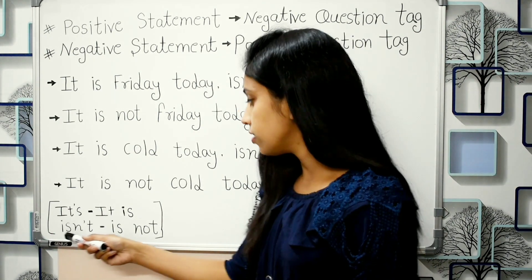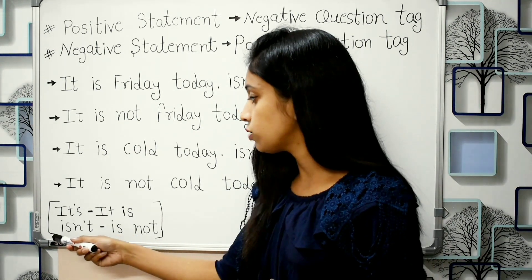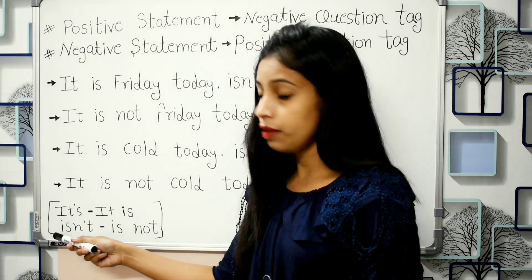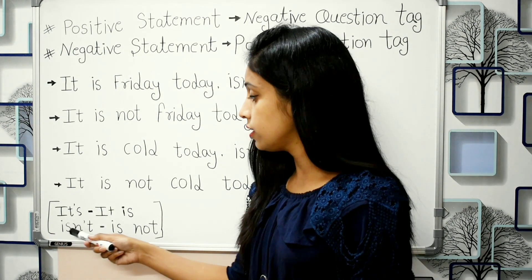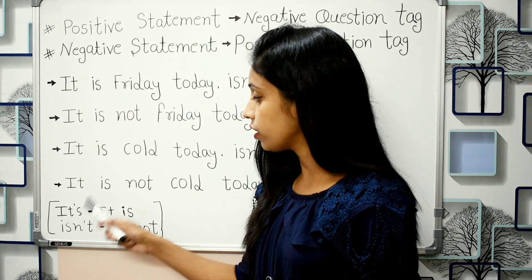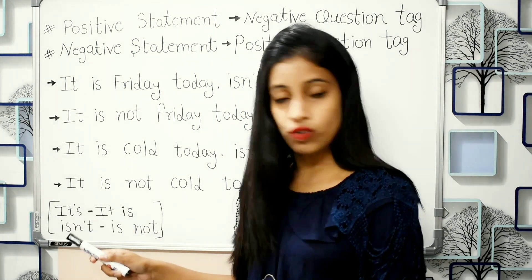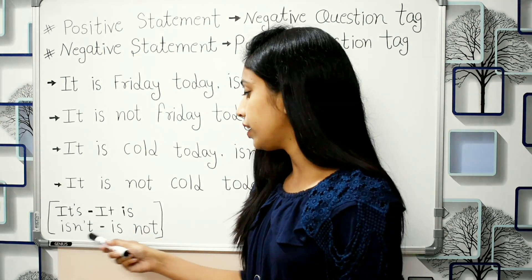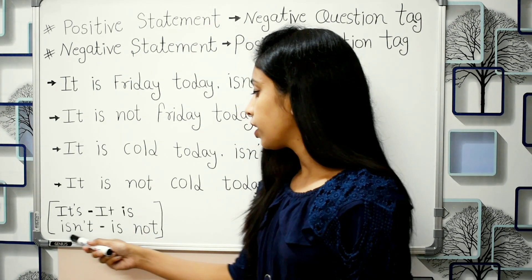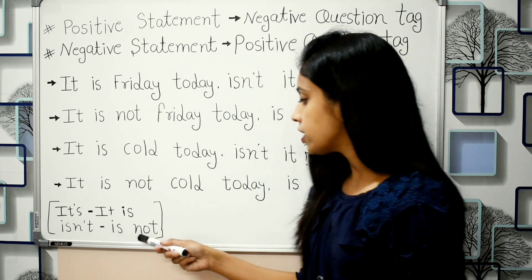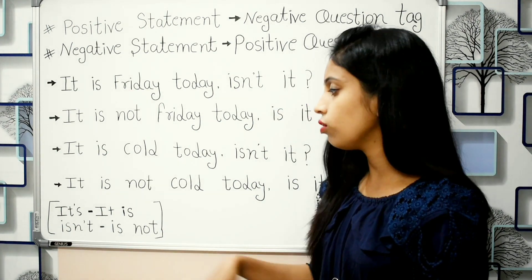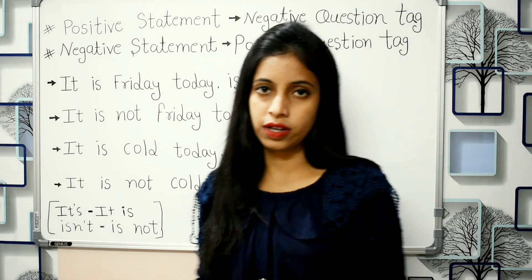The second short form is 'isn't' — I-S, then an apostrophe, then N-T. 'Isn't' means 'is not'. So these are our two short forms.